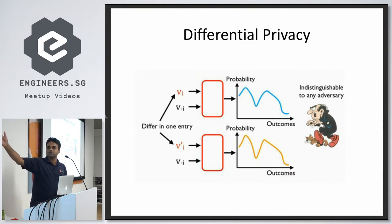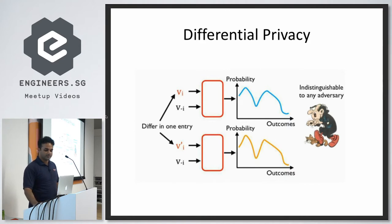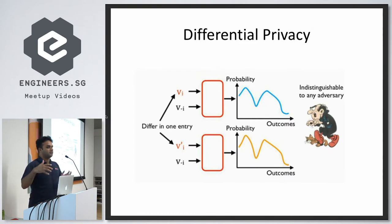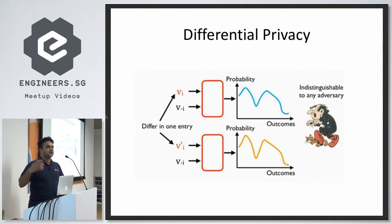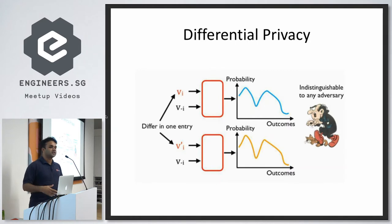You want to control the noise you're adding such that for two datasets where the difference is only in a single row, the outcome of the query looks more or less the same. From an adversarial perspective, if I want to figure out whether you have diabetes, I can't — because no matter what query I run, I'll get more or less the same result on both versions of the dataset.